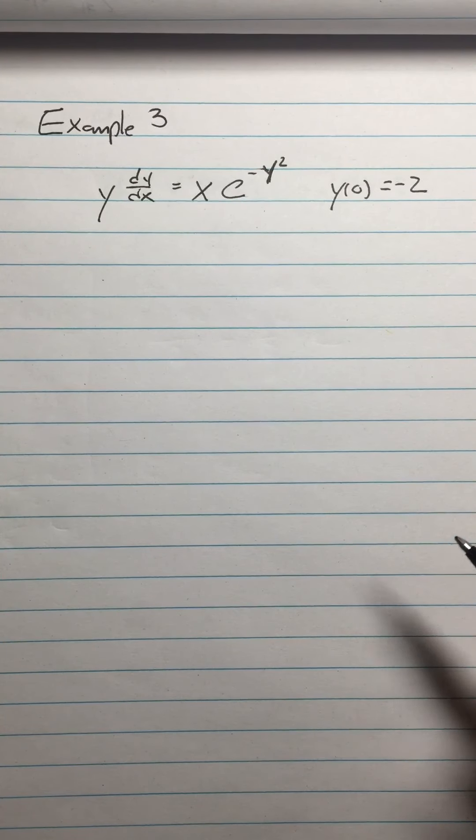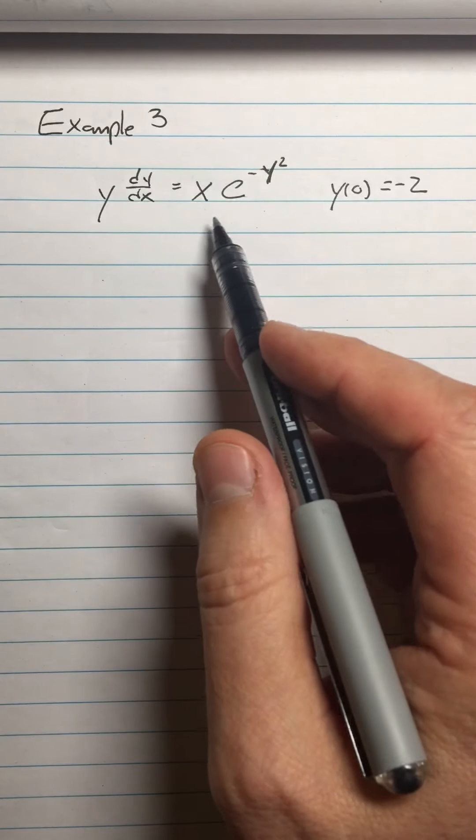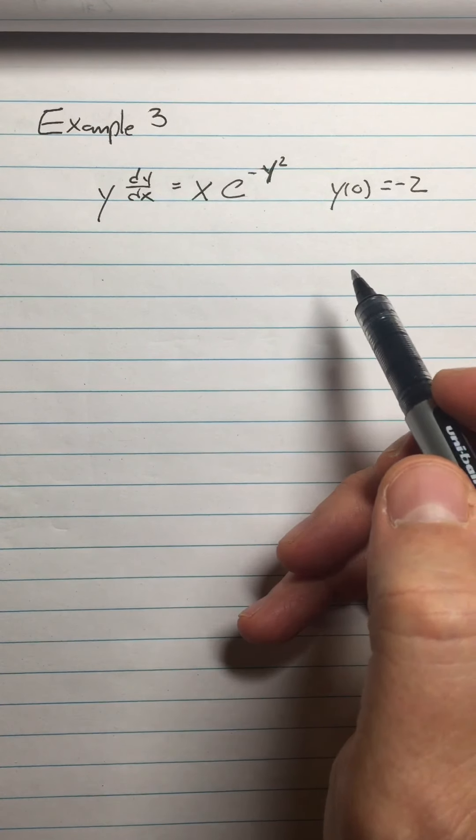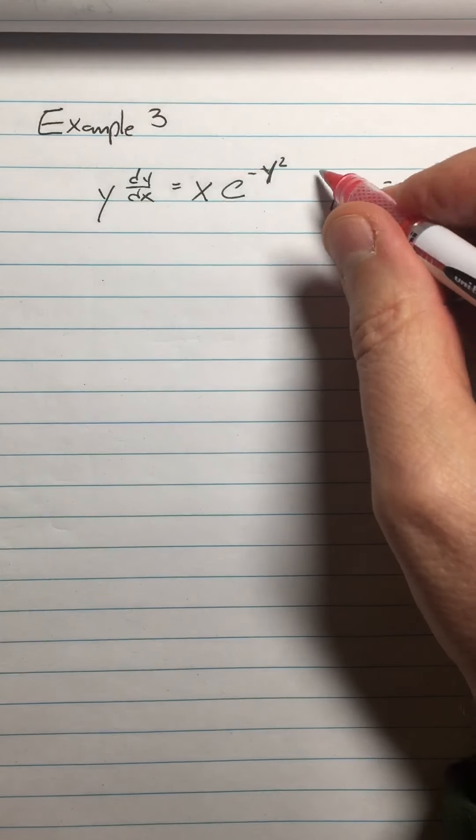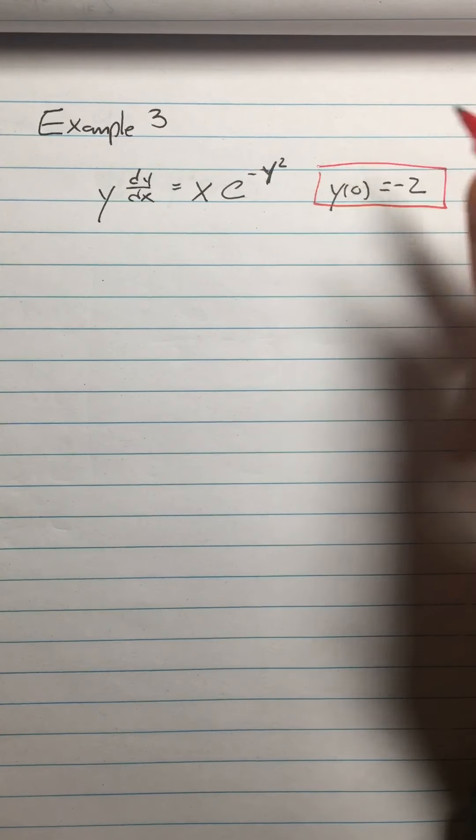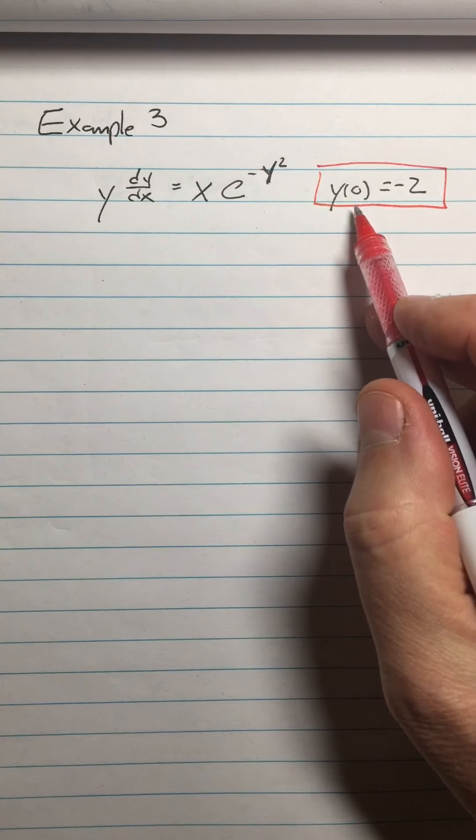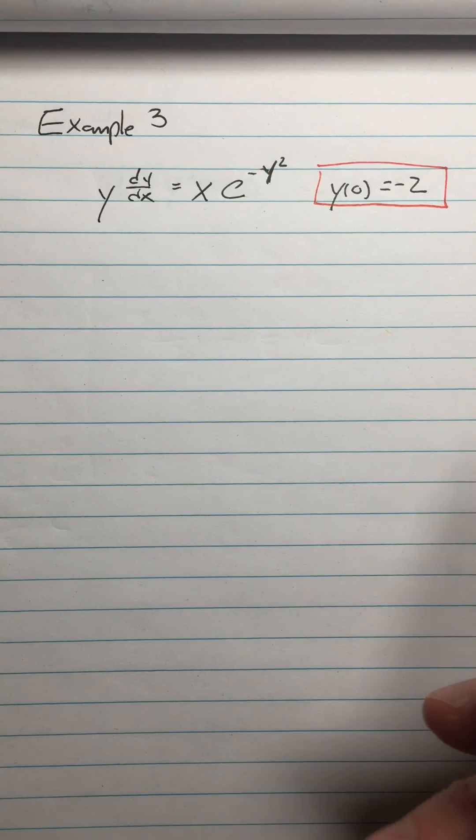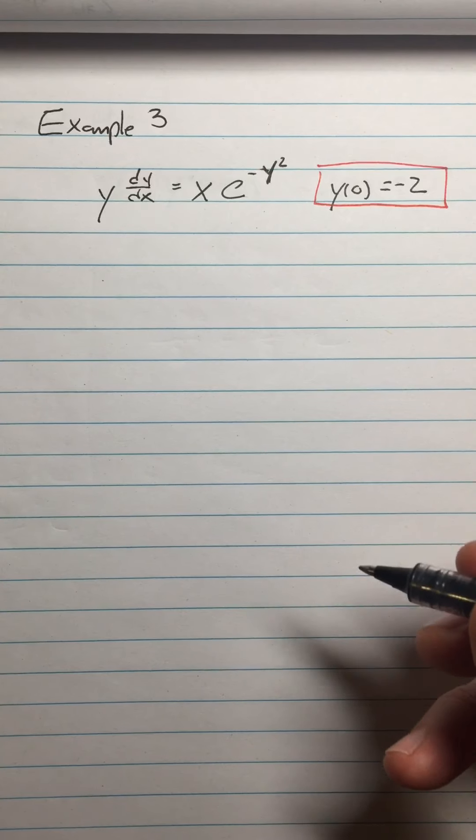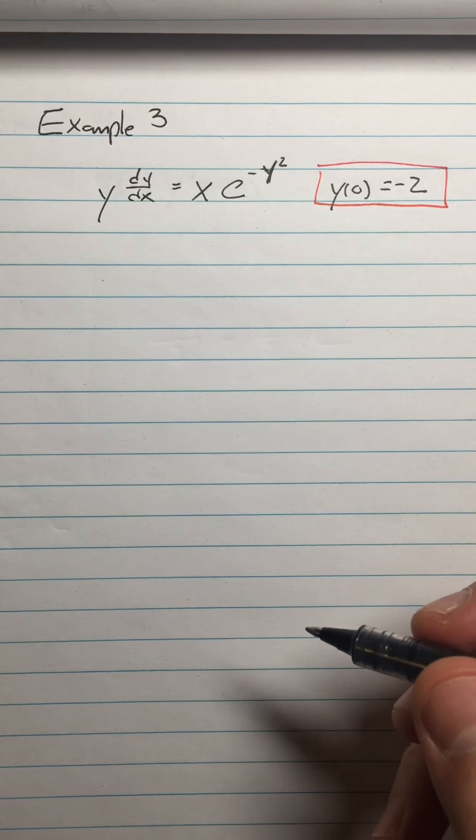All right, so just a couple more examples. Here's one: y dy/dx equals x e to the negative y squared. And this one contains a particular condition. This one could properly be called an initial condition because it's y of 0, but they could have given us y of 4 or something else. It doesn't have to be initial per se. So I like to call it a particular condition. That means we can get the particular solution.